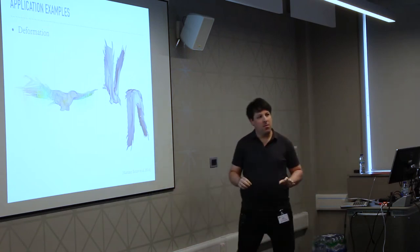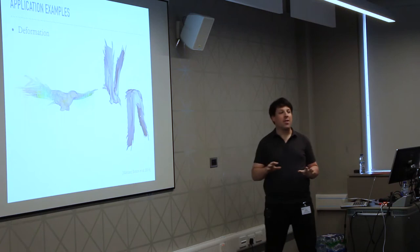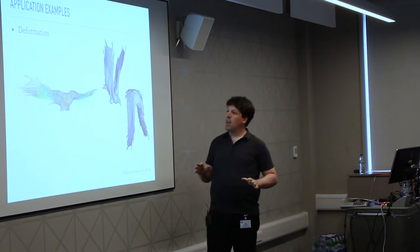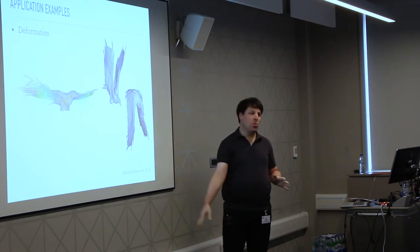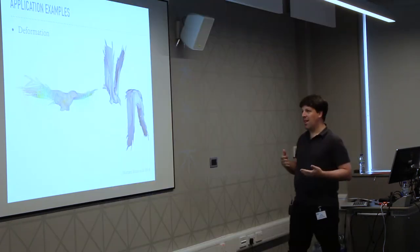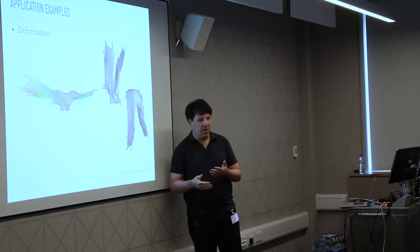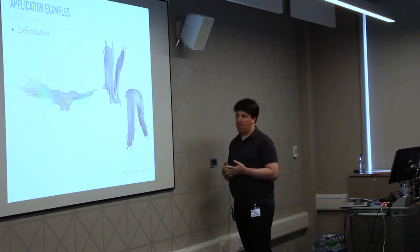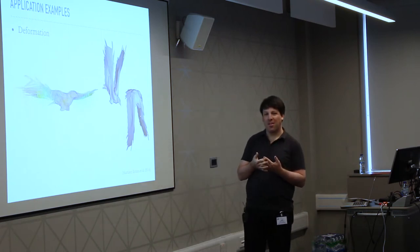One example that is not used very often for this, although I think it should be, is deformation. We have a source object and a target object, and you could model deformation simply by a vector field that takes source vertices to target vertices. When we model this kind of deformation, instead of talking about how much the surface deforms, we can talk about how much the vector field induces deformation. This has been done somewhat in the context of functional maps.